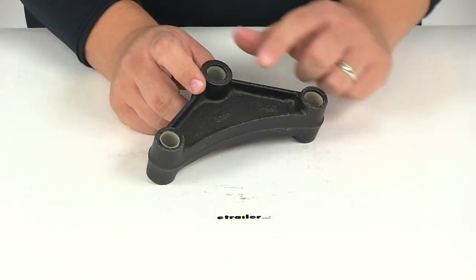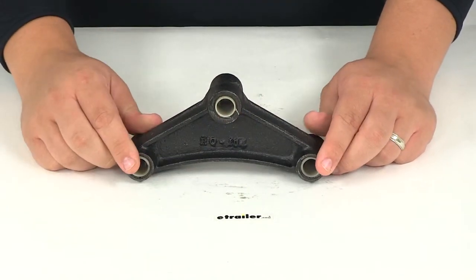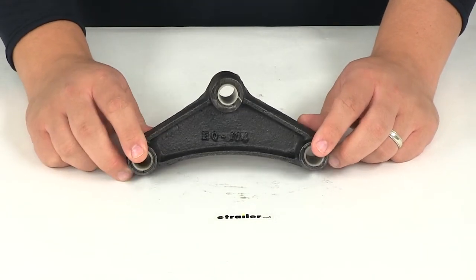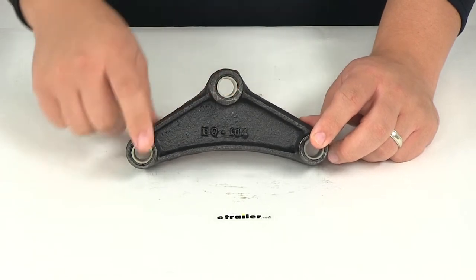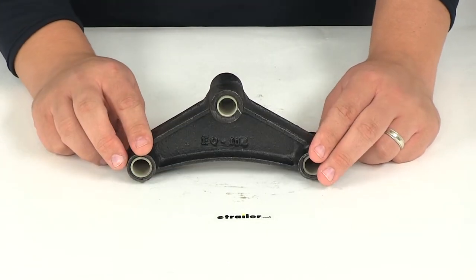You can see here that it features three holes. Each hole has a diameter of nine sixteenths of an inch. The center bolt hole is the same as the two outer ones, again at nine sixteenths of an inch.